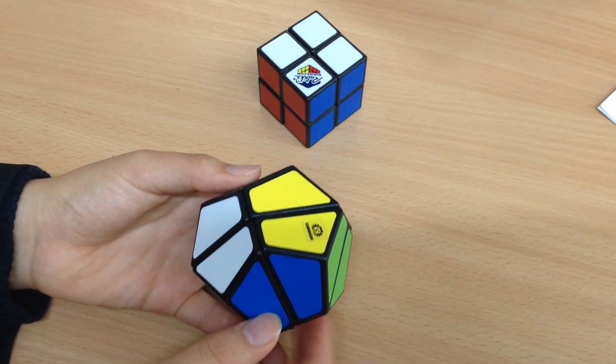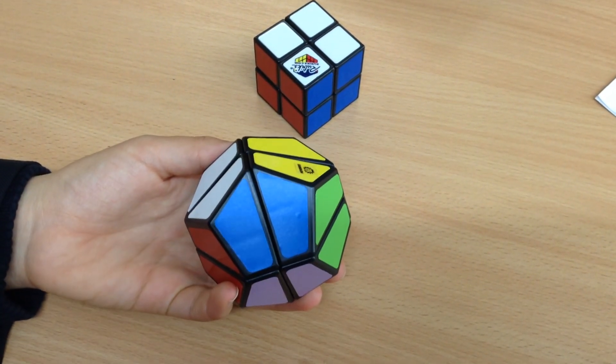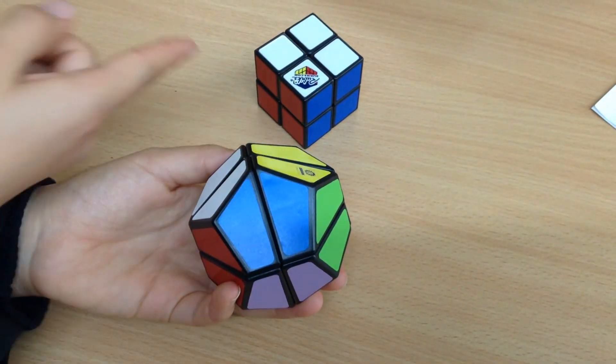So if I pretend that this is all one colour and this is one colour and so on, I can solve it exactly the same as if it was a 2x2.